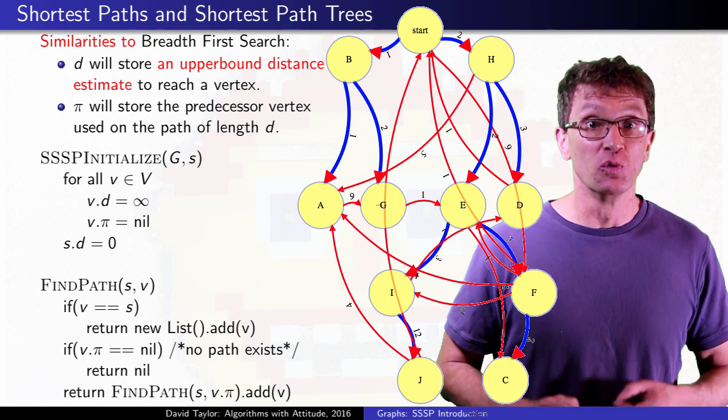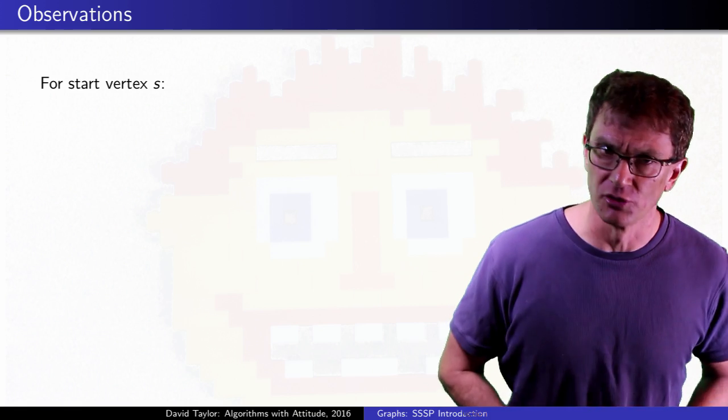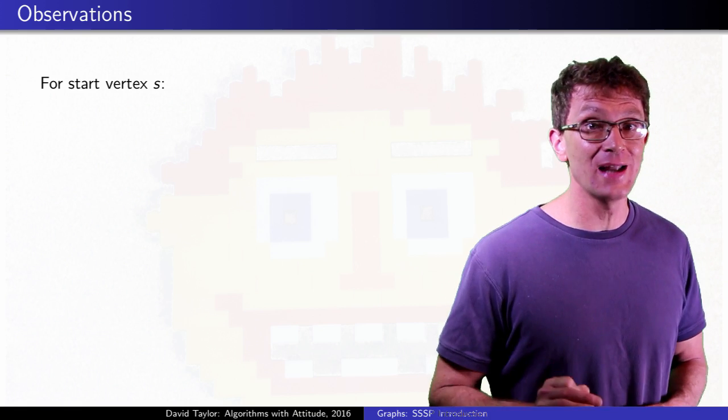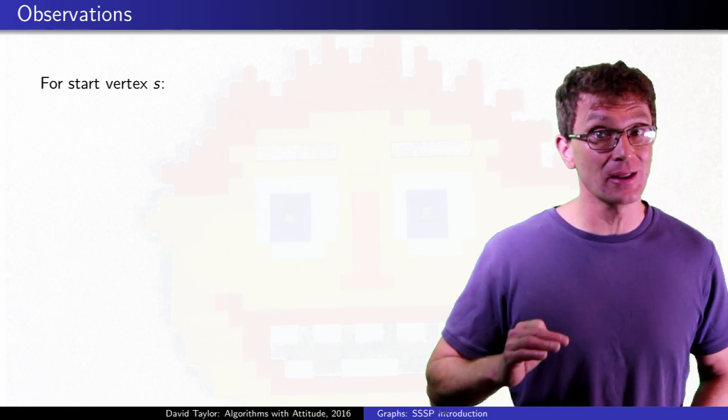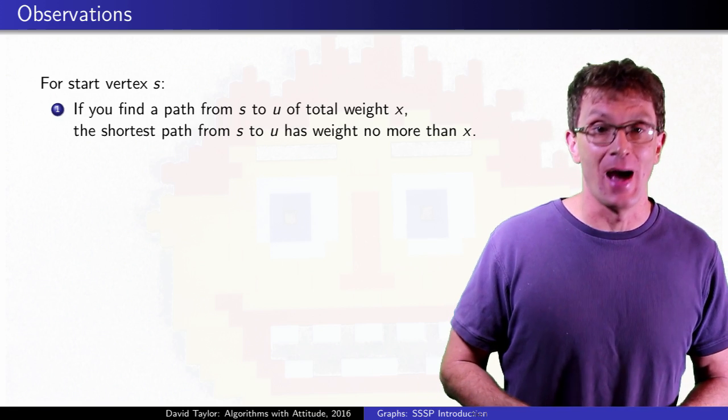When we are done, we reconstruct paths just like in breadth first search too. Obvious observation time: if you find a path of a given length to a vertex, the shortest path is not longer than that path.